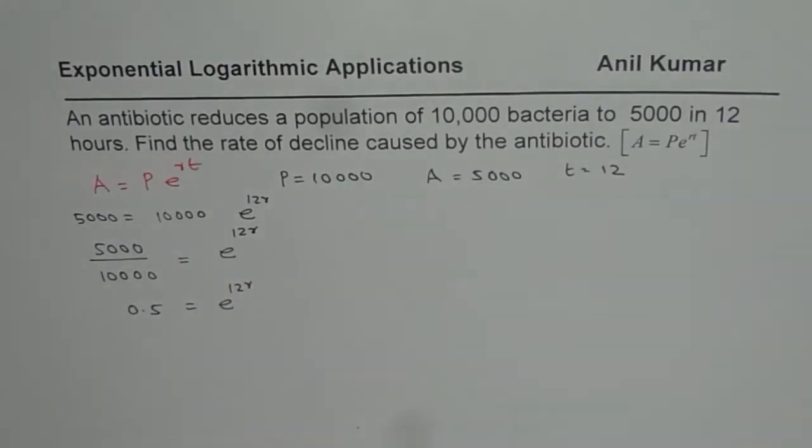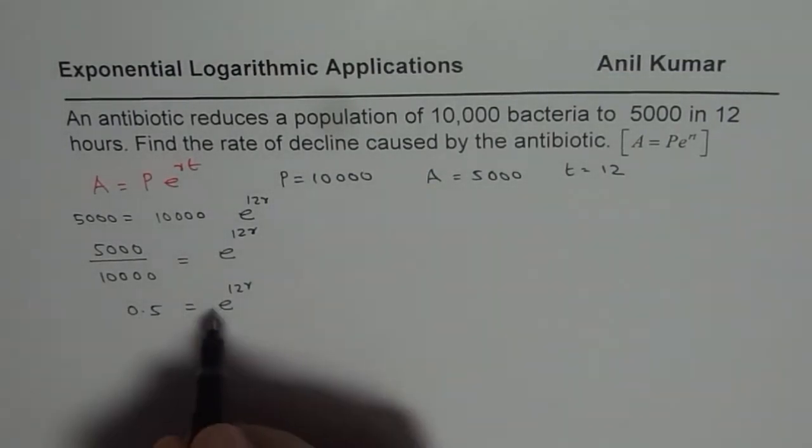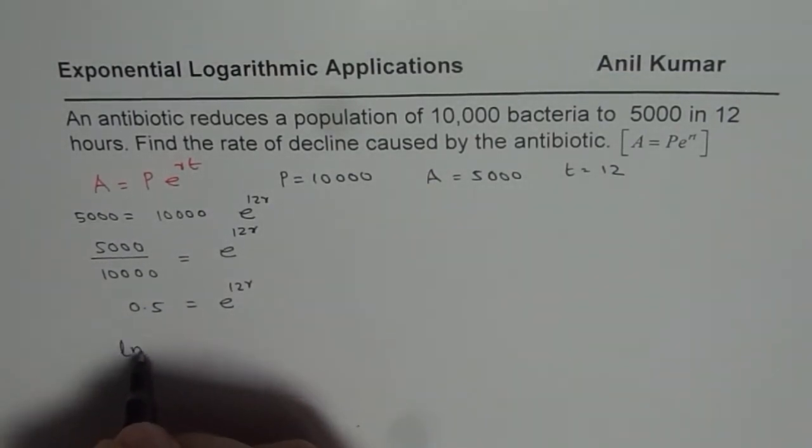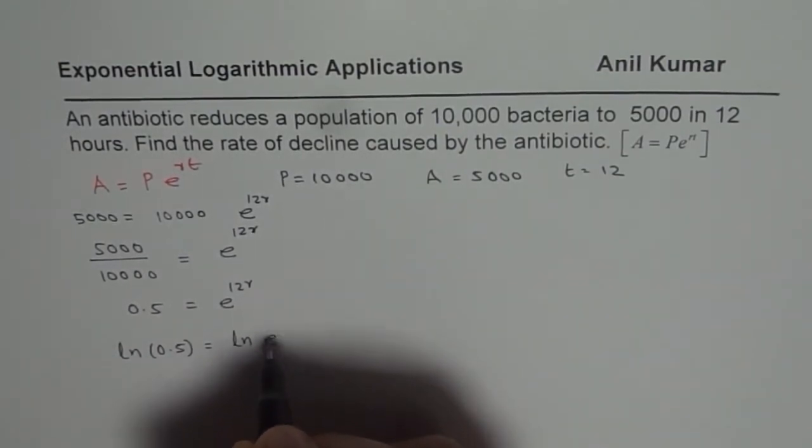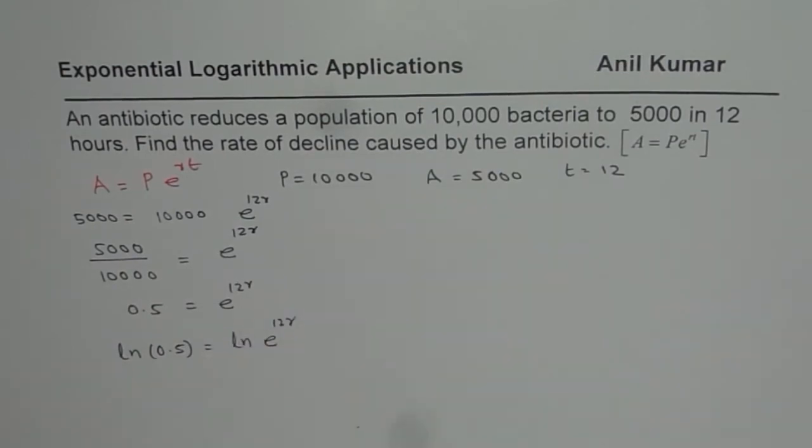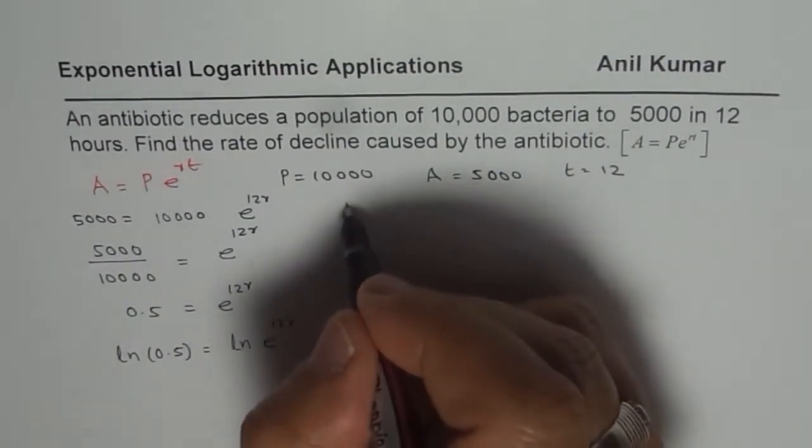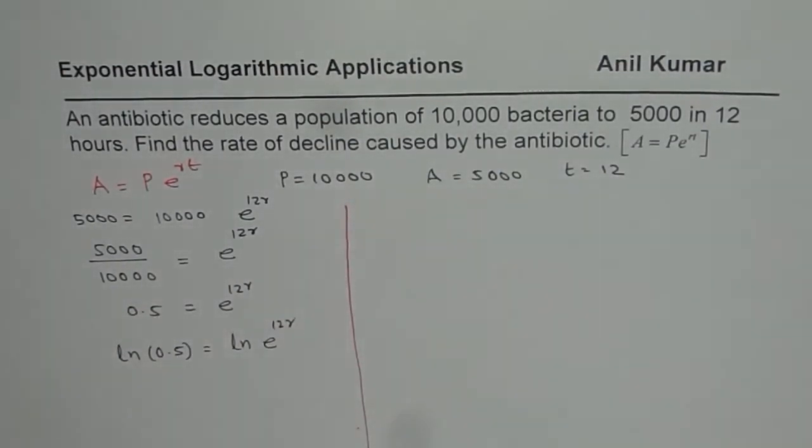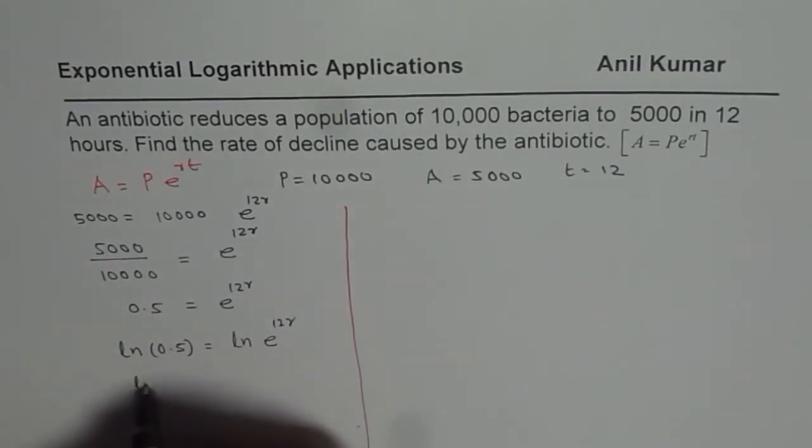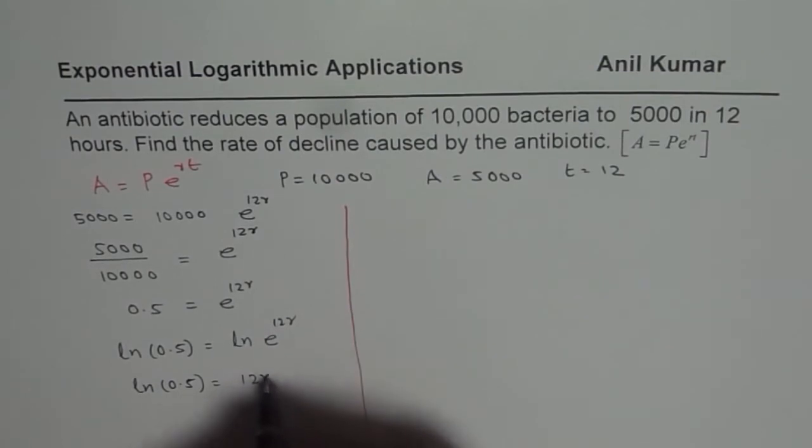To solve such an equation, we have to take natural log on both sides. So we have ln 0.5 equals ln e to the power of 12R. Using the properties of logarithms, we can rearrange this. We get ln 0.5 equals 12R times ln e. ln e is actually 1.